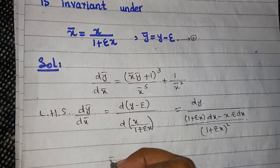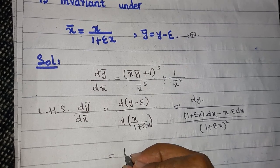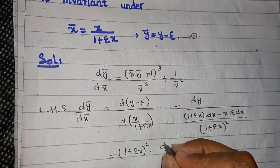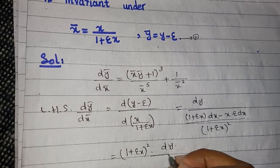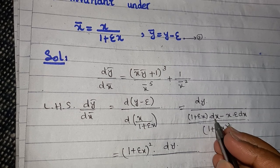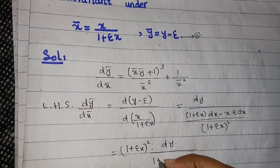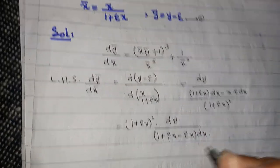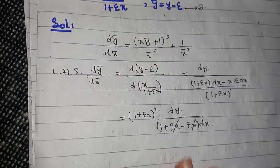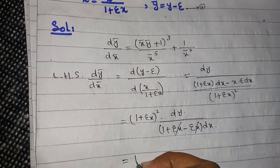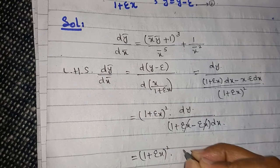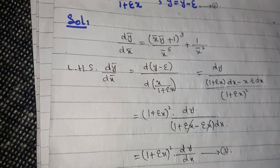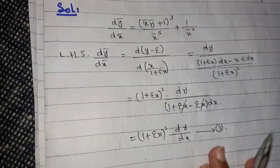Simplifying further, you get (1 plus epsilon*x)^2 times dy in the numerator. Factoring out dx, you get (1 plus epsilon*x minus epsilon*x) times dx, and both epsilon*x terms cancel. This leaves (1 plus epsilon*x)^2 times dy/dx — call this equation number 3.